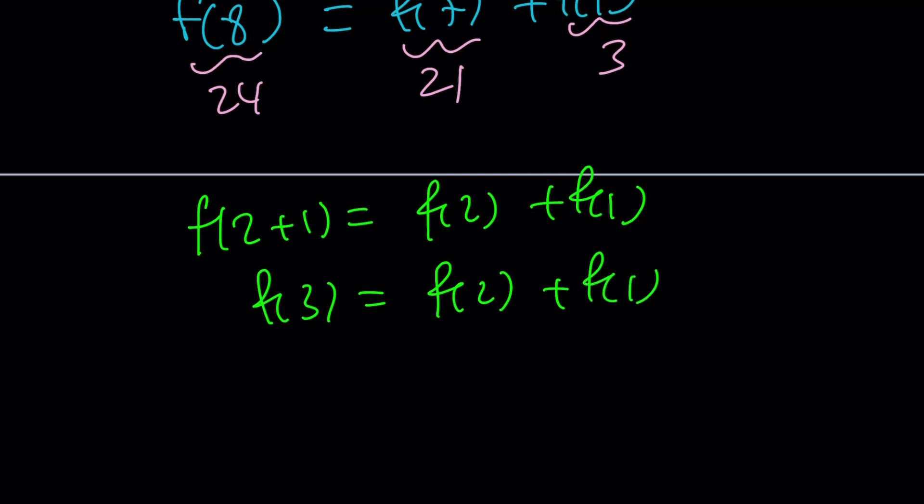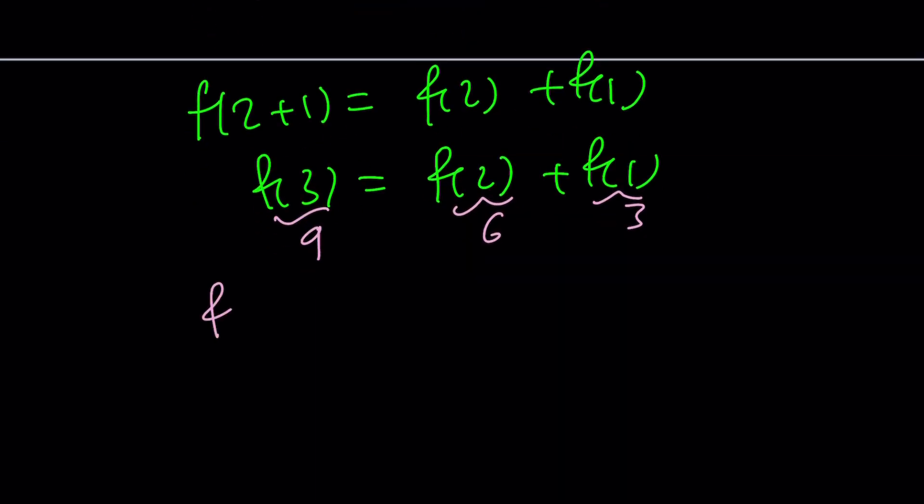f of 1 is 3, this is 2 times 3, 6, and so it's going to be 9. You get the idea? We're supposed to find f of 7, so we have to continue. f of 4 plus 3 is equal to f of 4 plus f of 3. But I do know that f of 3 now is 9, so this is 9. And f of 4 is 2 times f of 2, which is 12. Their sum is 21 again.